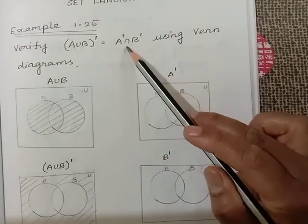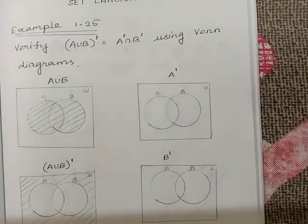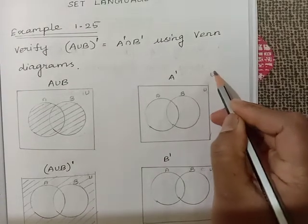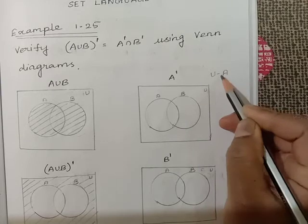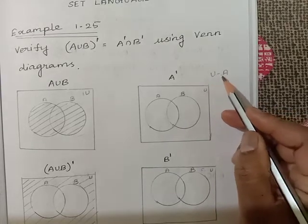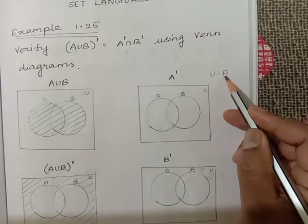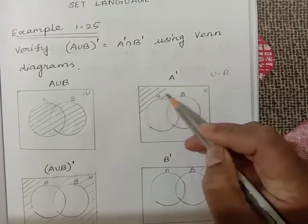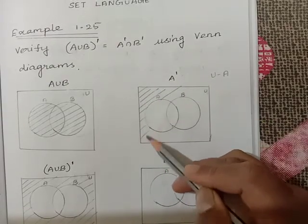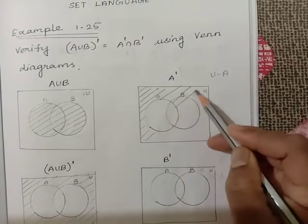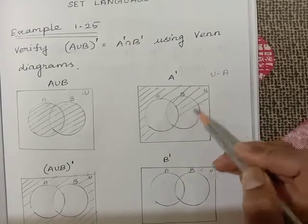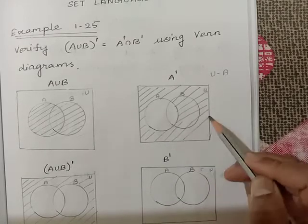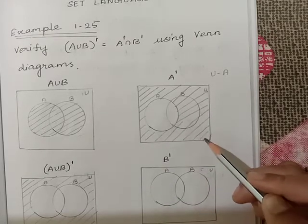A' means universal minus A. We need the portion of the universal set but we don't want the portion of A. We will cover the universal portion but omit only the circle of A. The remaining all portions in the universe gives you A'.